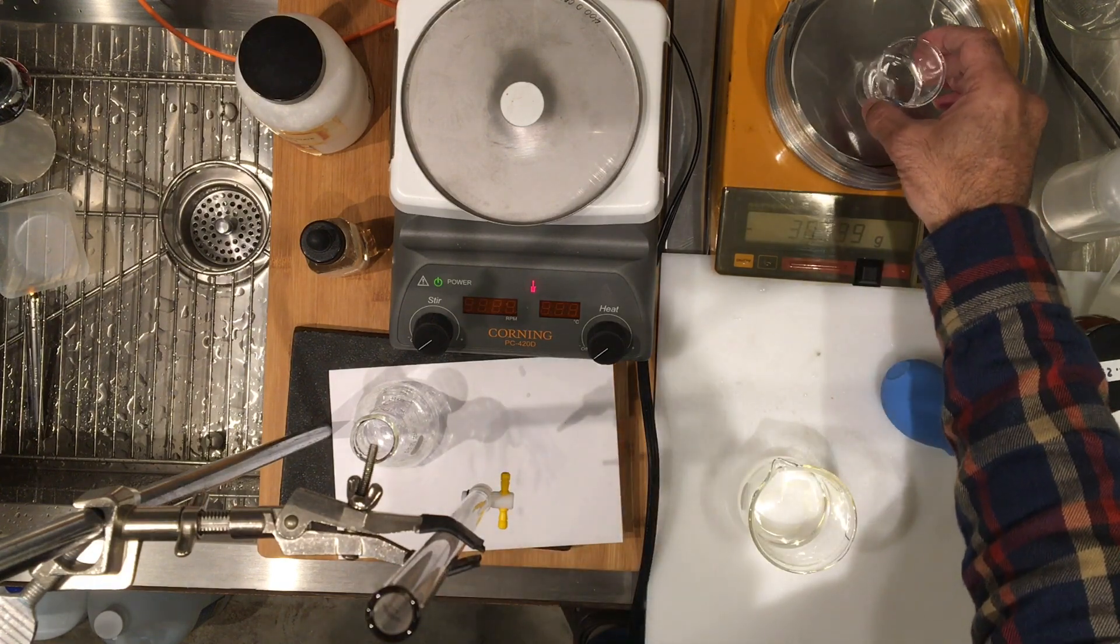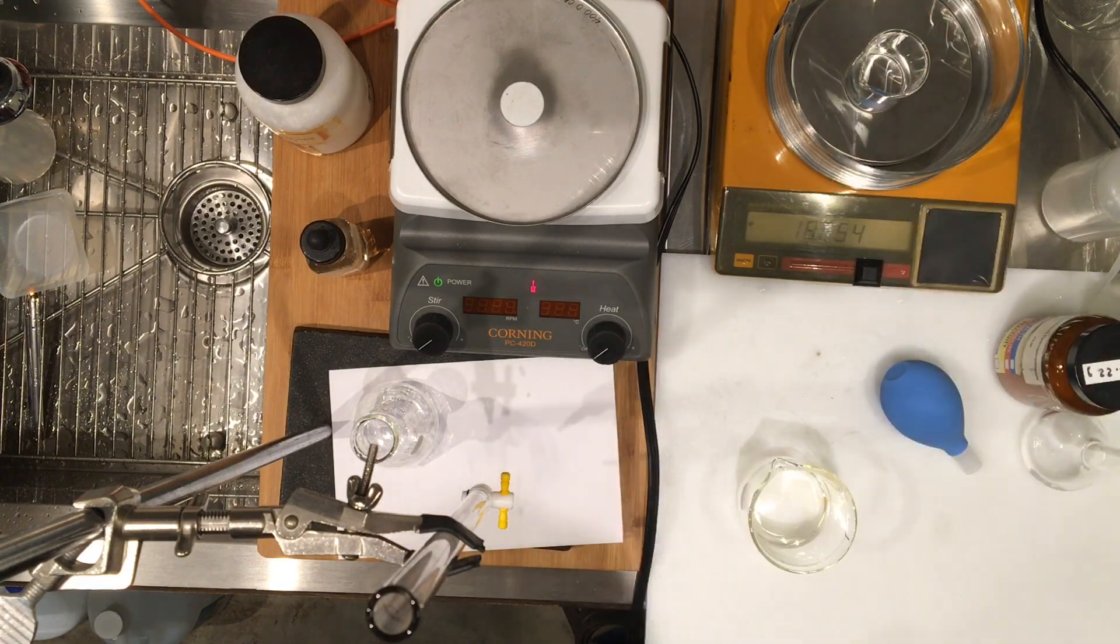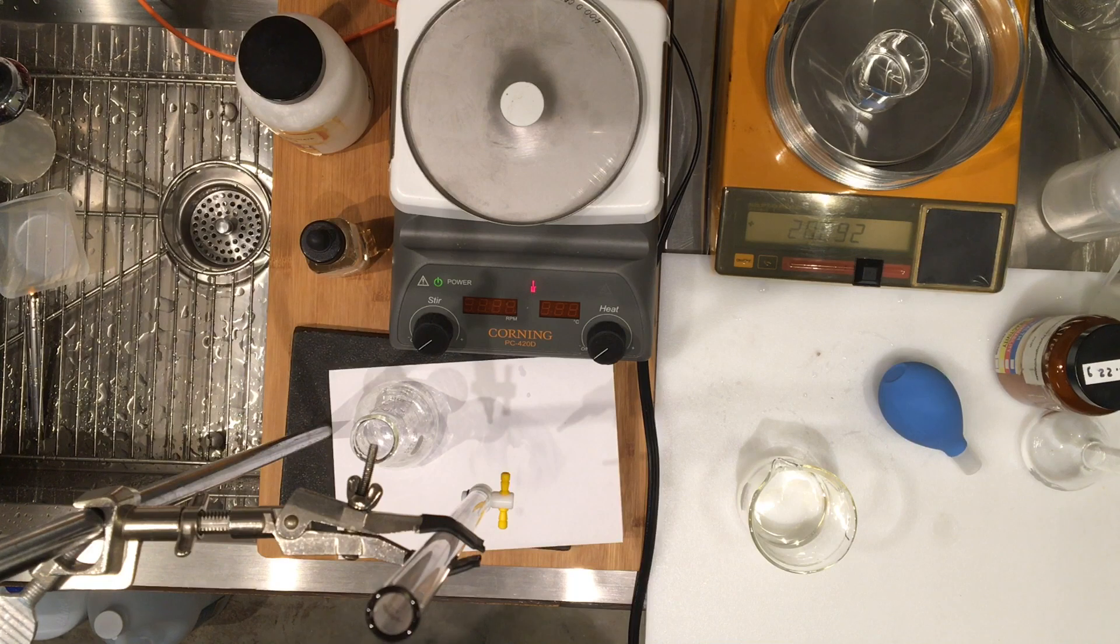Okay, so record this mass. This is the mass of 20 milliliter, it's 20.092 grams.